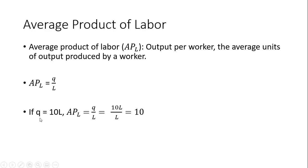With our production function Q equals 10L, the average product of labor is Q divided by L. To get the average product of labor function, we substitute Q with the short run production function, 10 times L. So 10L divided by L gives us an average product of labor of 10. On average, each worker produces 10 units of output given this production function.